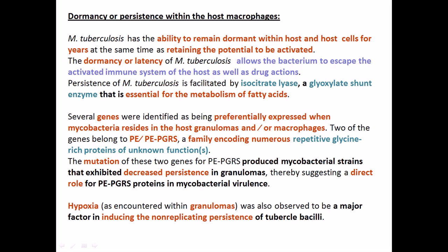The dormancy or latency of Mycobacterium tuberculosis allows the bacterium to escape the activated immune system. When the bacterium resides inside your body, your immune system is highly active — it can find those bacteria, produce antibodies against them, those antibodies will help in the opsonization of the bacteria, and phagocytic cells will go there and kill them.